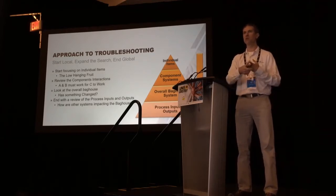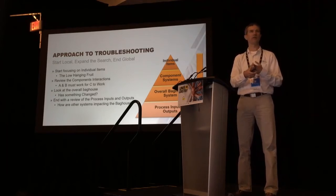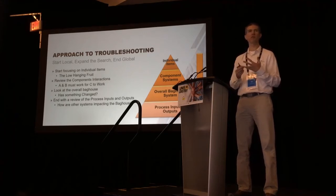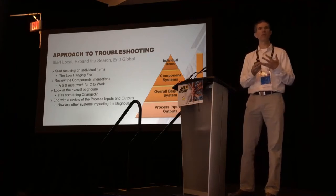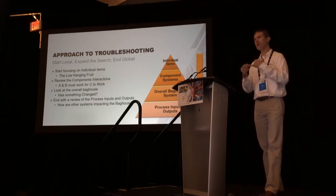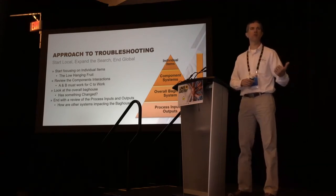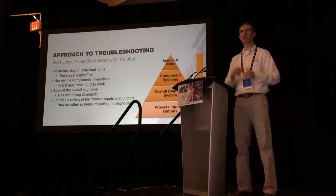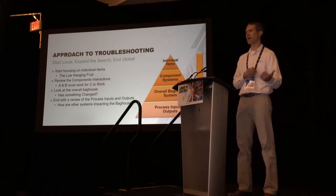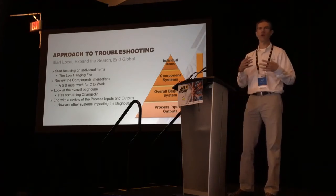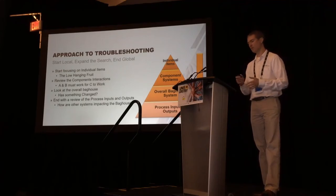I want to start with individual items where I think the failure might be occurring, then look at those small subsystems and systems to see if there's an issue going on. Then ask: do I have an issue in the overall baghouse? And lastly, did something change in my process, either upstream or downstream of that system, that could be causing the failure or problem?